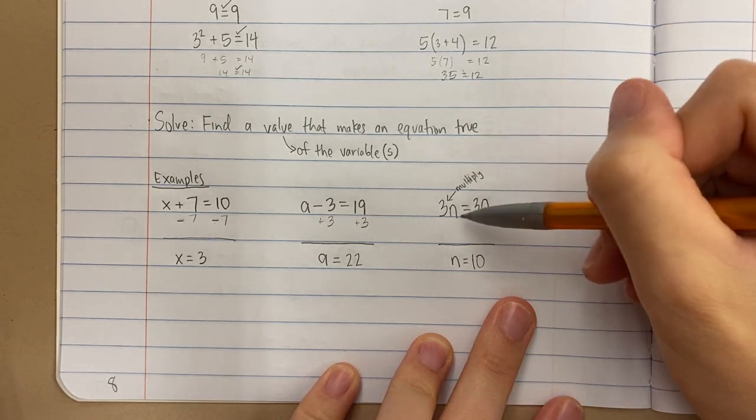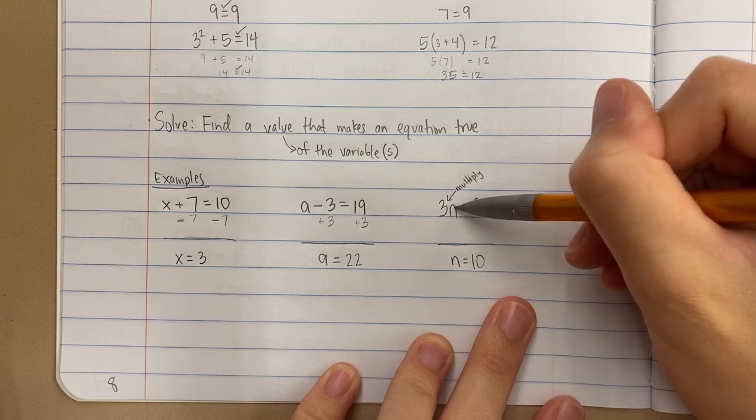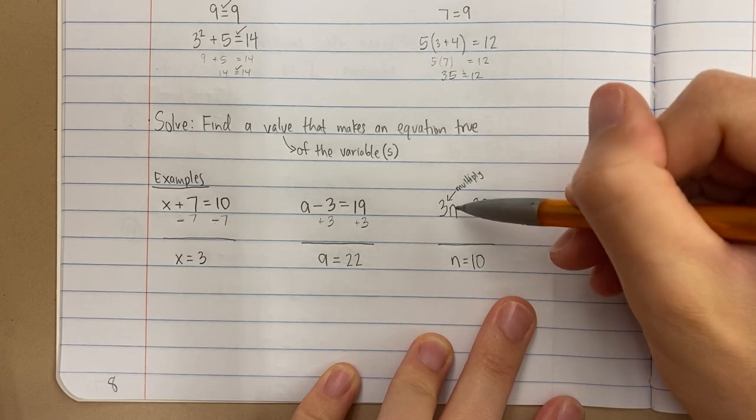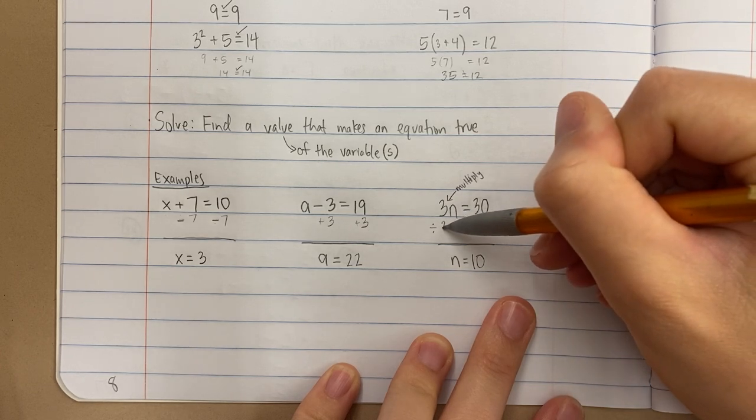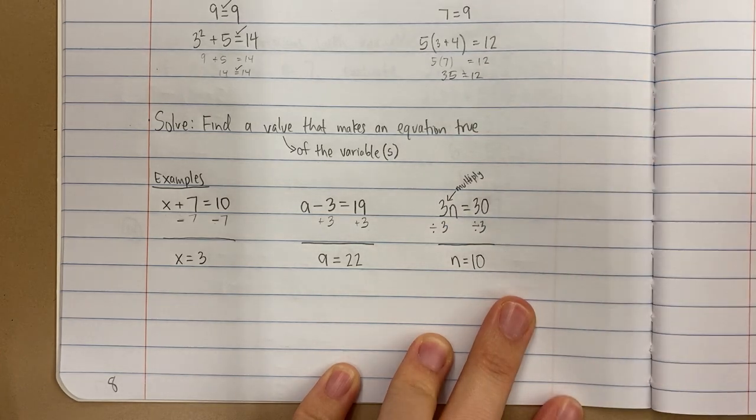Or another way of thinking about it is saying, if I'm going to multiply a number times 3 to get 30, I would have to do the opposite. I'd have to divide 30 by 3 to get my answer.